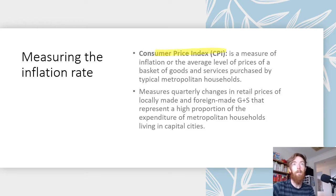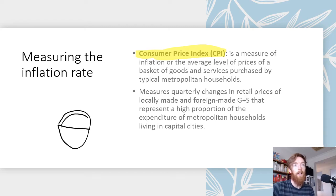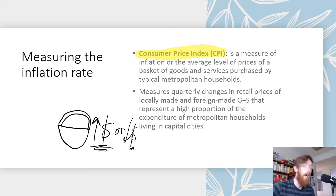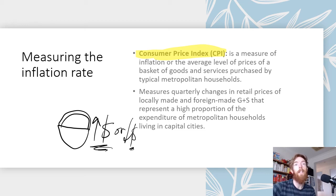Inflation is measured through the Consumer Price Index, which measures the average level of prices of a basket of goods and services purchased by typical metropolitan households. It doesn't look at every good or service, but at a hypothetical basket and tracks how those prices change over time. It measures quarterly changes in retail prices of locally made and foreign made goods and services.